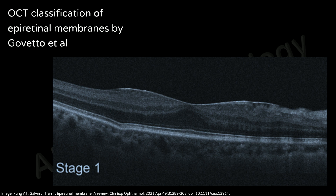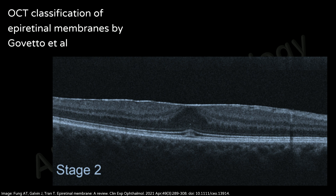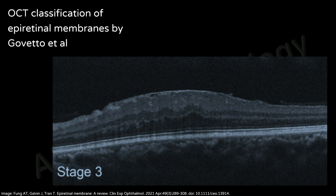Stage two is defined as the presence of ERMs associated with more progressive retinal distortion. The foveal depression is lost and a characteristic stretching of the outer nuclear layer is present. All retinal layers are defined and clearly identified with OCT.